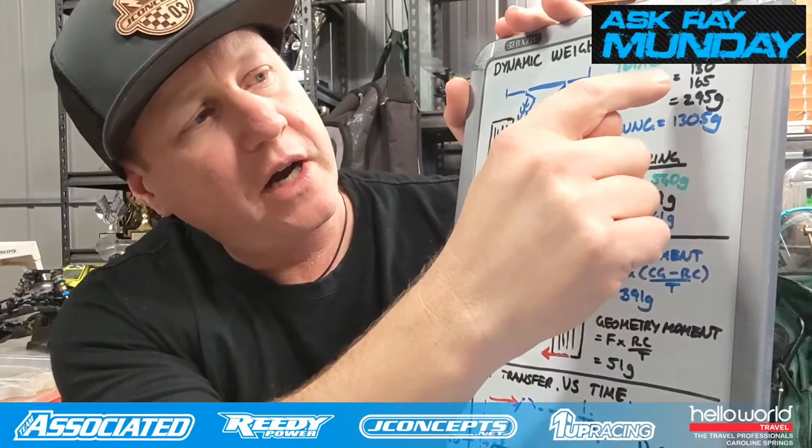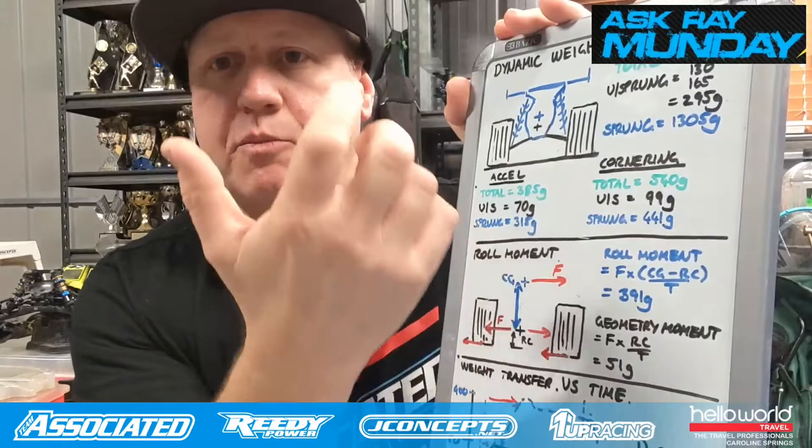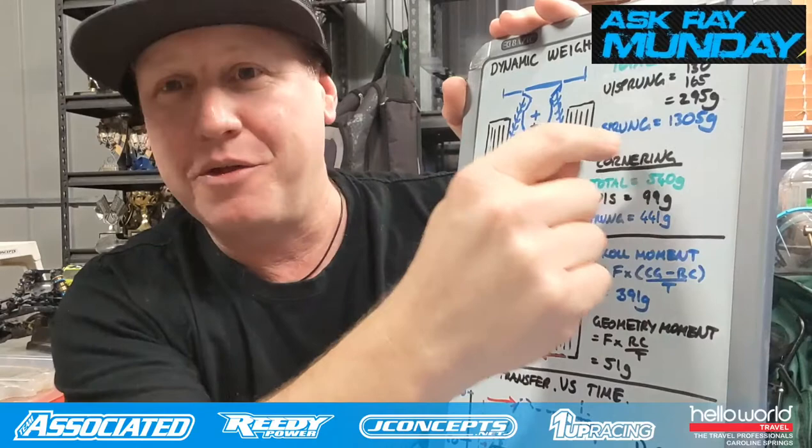When we're going around a track the sprung mass can move on the suspension, while the unsprung mass is directly connected to the ground. To put some numbers to it: on the B6.3D the front unsprung mass is about 130 grams, the rear unsprung mass is about 165 grams — so total just under 300 grams out of our 1600 grams is unsprung mass. The sprung mass — the main body and chassis — is about 1300 grams. So roughly 80 percent of our weight is held up by the suspension.